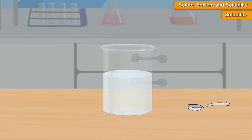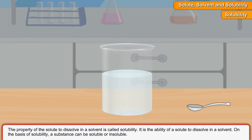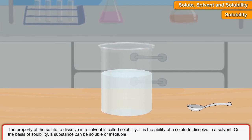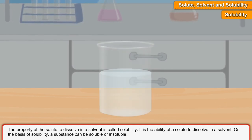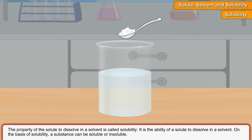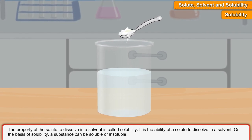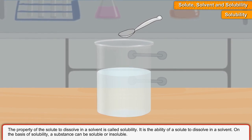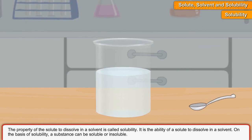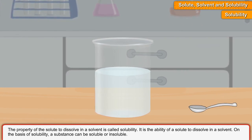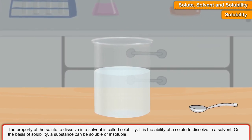Solubility: The property of the solute to dissolve in a solvent is called solubility. It is the ability of a solute to dissolve in a solvent. On the basis of solubility, a substance can be soluble or insoluble.